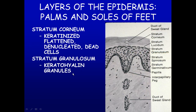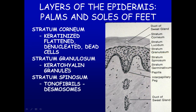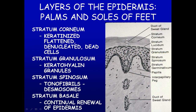The stratum granulosum has keratin hyaline granules inside, and that's what we see as the granules. Below that is the stratum spinosum, which has spines because of the tonofilaments or desmosomes. The very basal layer is the stratum basale, also called the stratum germinativum.